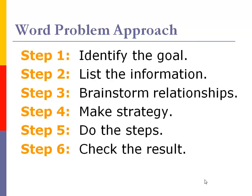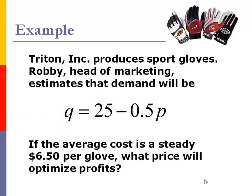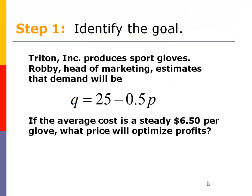So now let's do a word problem and follow this approach. We're making sport gloves. I got a demand function. We've got some information about the average cost, that's $6.50 per glove. And then the question is asking what price will optimize profits. So that's our word problem. Nice, straightforward, easy one to do.